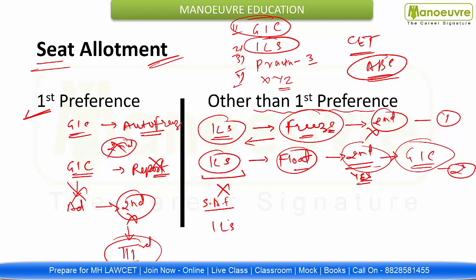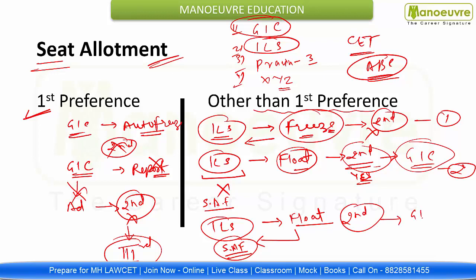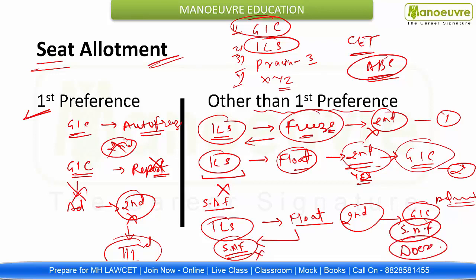Third chance: you got ILS, you wanted GLC, you floated it — but you also paid the seat acceptance fees to ILS. Then you can participate in Round 2 and try for GLC. If you get admission in GLC, you pay the seat acceptance fees there, verify documents, cancel this ILS admission, and move to GLC. If GLC is not allotted, then you can take admission to ILS — because you already paid seat acceptance fees there.